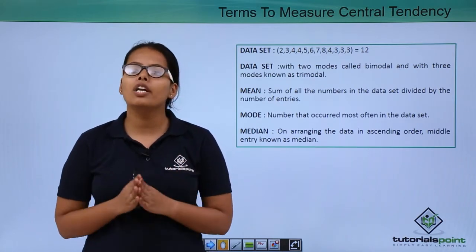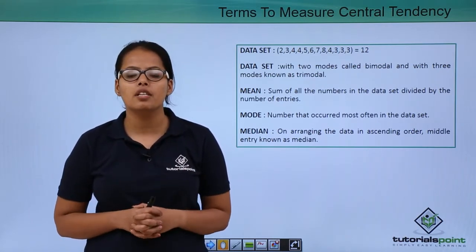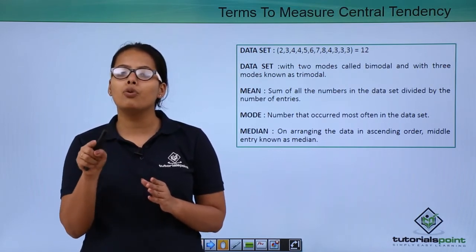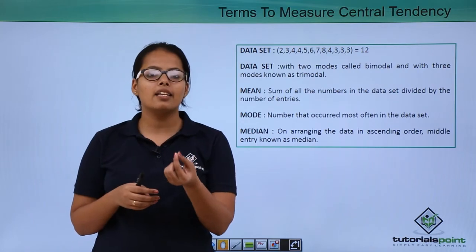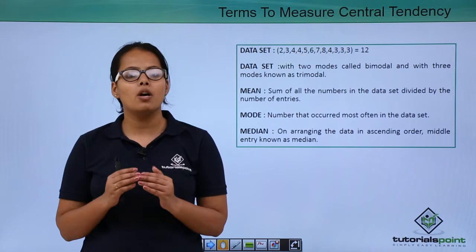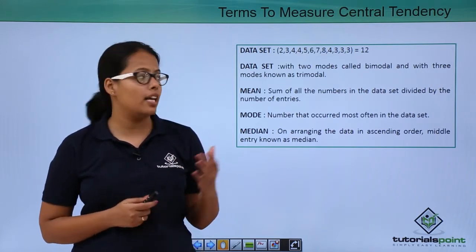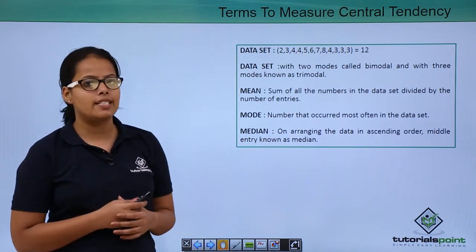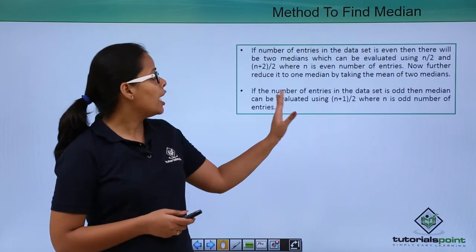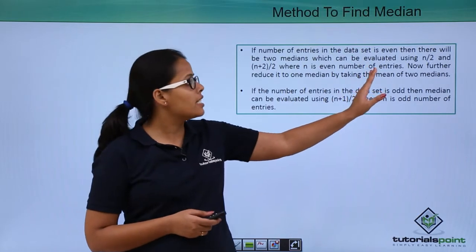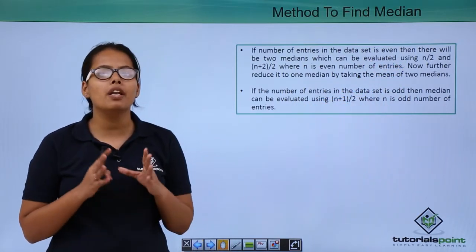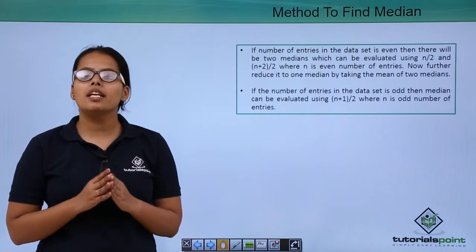But if there are an even number of entries — let's suppose there are 6 entries — you will take the median of the values at rank 3 and rank 4. Those numbers lying at rank 3 and rank 4 you will take the mean of those two to find the median. I will discuss rank later in this video lecture.